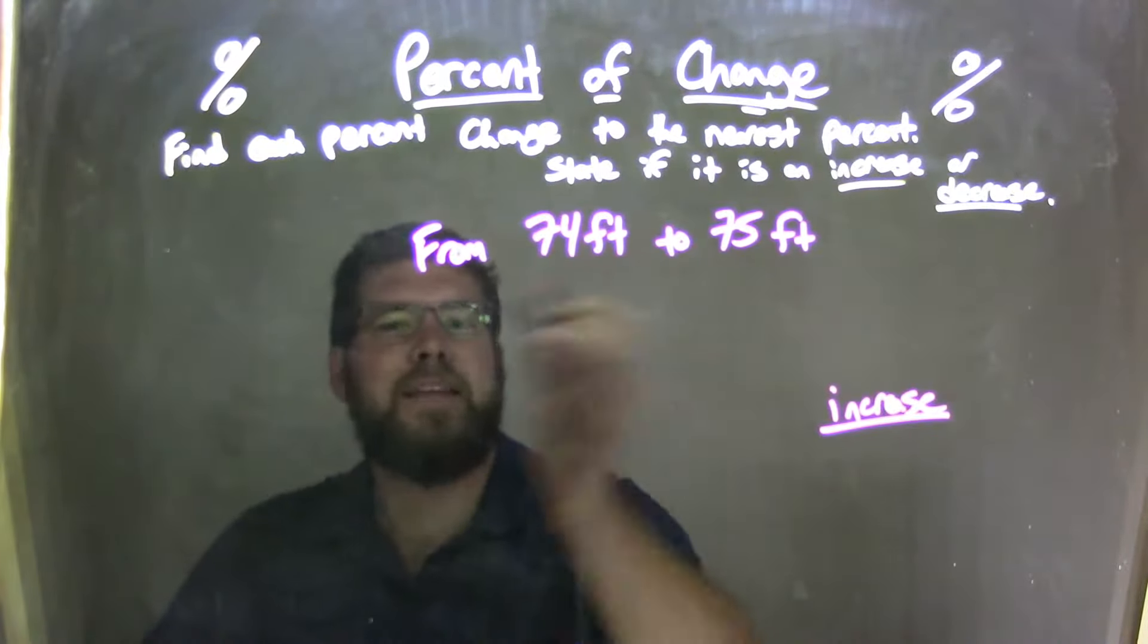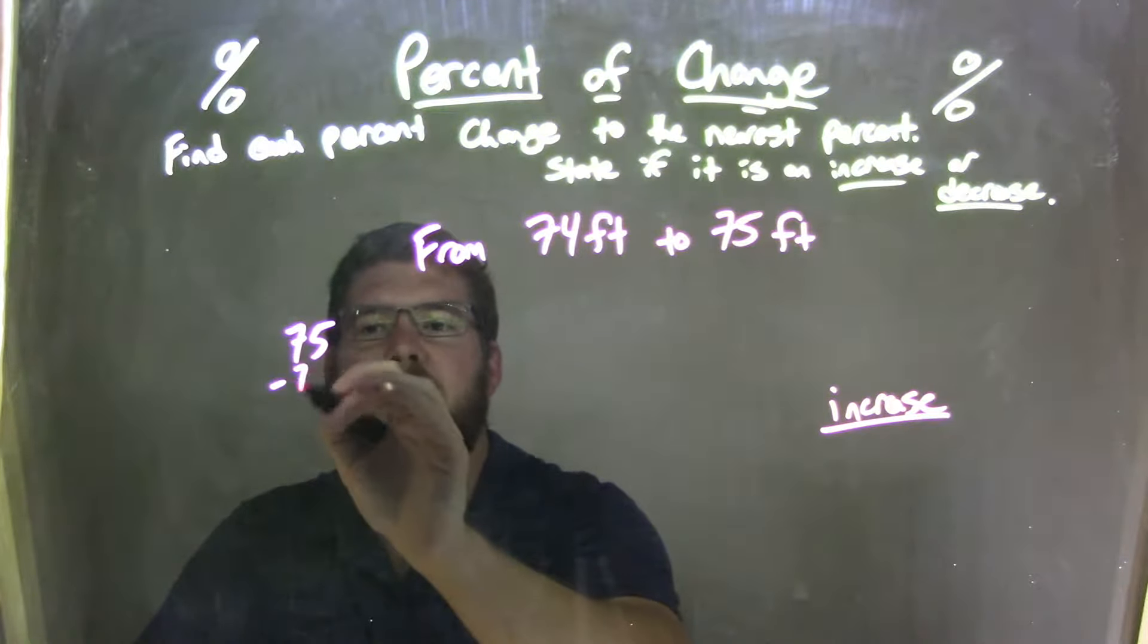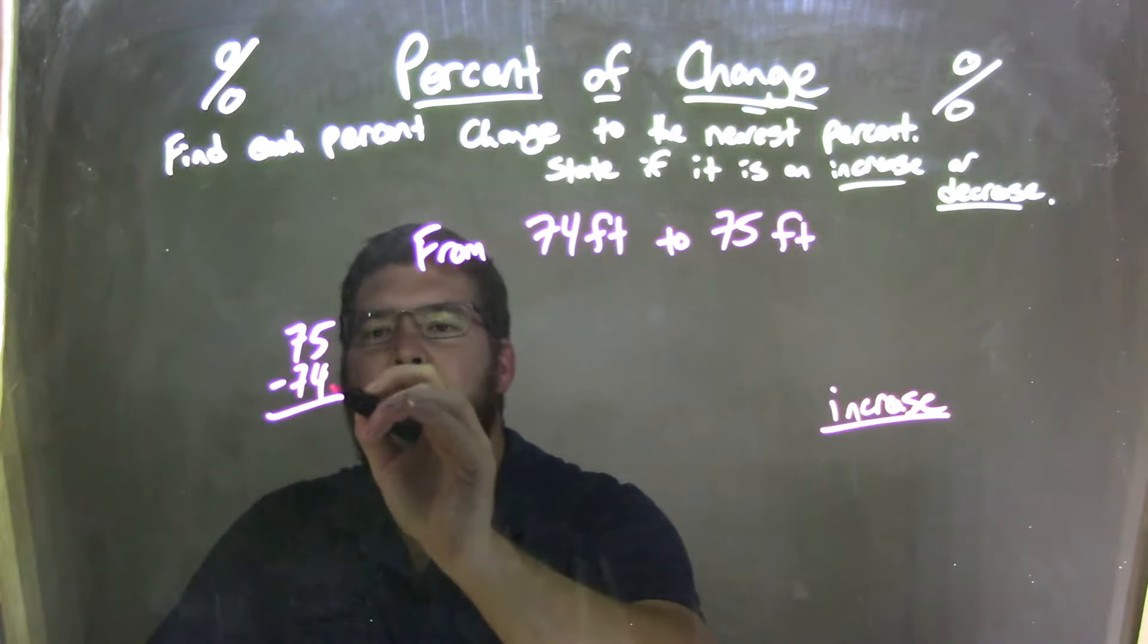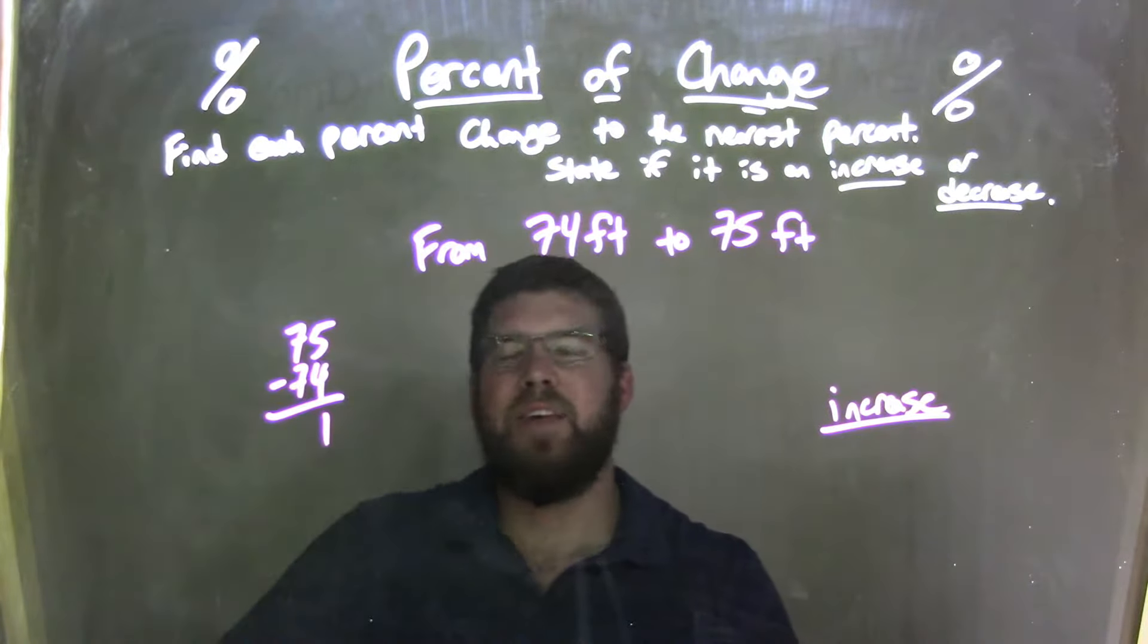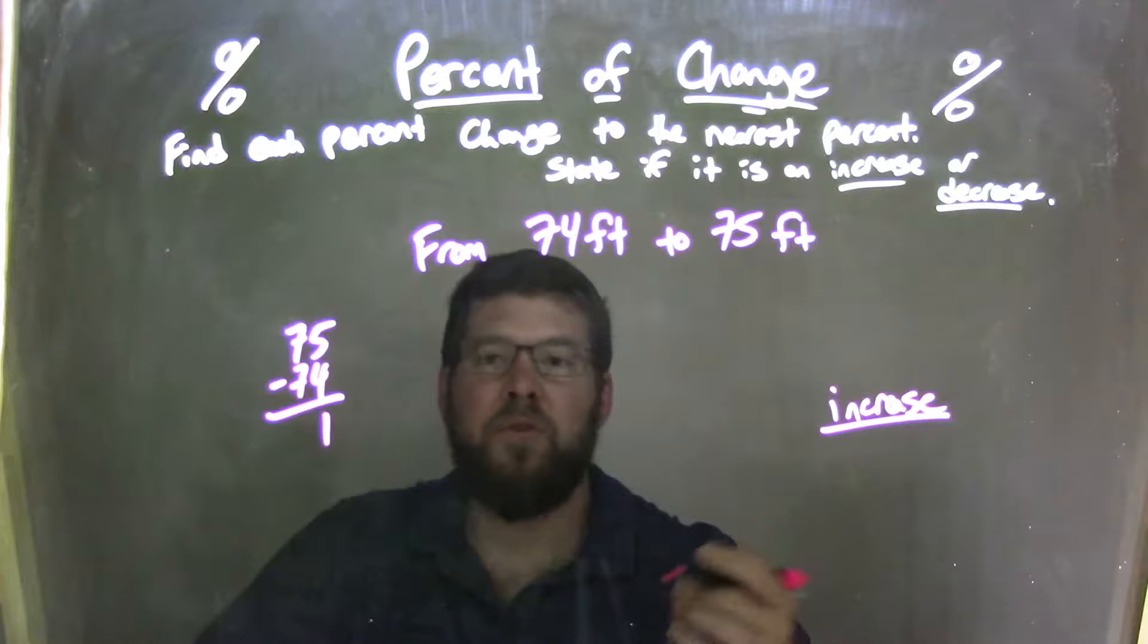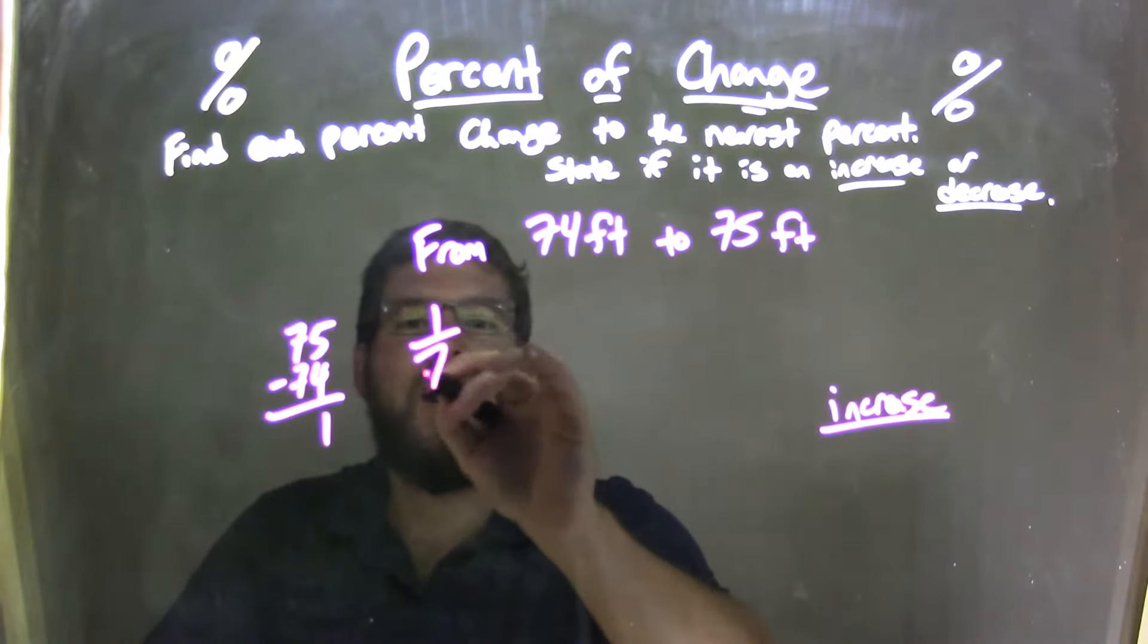Okay, so now I want to find a difference between 75 minus 74. 5 minus 4 is 1, 7 minus 7 is 0. So we just have 1. You can see that, but it's just one foot increase. So we take 1, we divide it by 74.